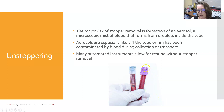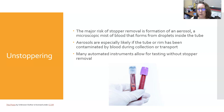Many automated instruments allow testing without stopper removal. For example, the purple top going to hematology is usually tested without stopper removal, while the light blue top must be centrifuged and the lid removed for coagulation analysis. Some instruments are cap-piercing and some are not. If you place a specimen in an analyzer with a cap on when it is not a cap-piercing probe, the probe will crash into the lid and cause an instrument malfunction.